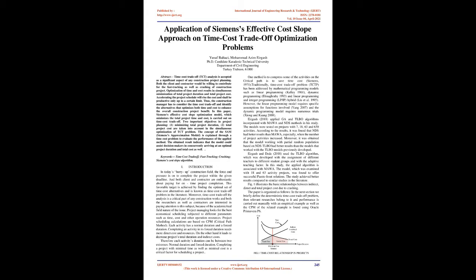Project management looks for the best economical scheduling subjected to different parameters such as time, cost, and other operational resources. Project scheduling calculations are based on CPM, critical path method. Each activity has a normal duration and a forced duration. Completing an activity in its forced duration needs more direct cost and resources. On the other hand, it leads to a decrease in the project's total duration and indirect costs. Therefore, each activity's duration can be between two extremes: normal duration and forced duration. Completing a project with minimal time as well as minimal cost is a critical factor for scheduling. One method is to compress some of the activities on the critical path to save time-cost (Siemens, 1971).